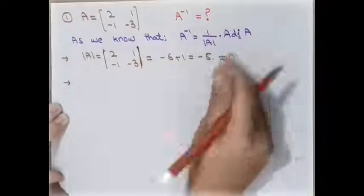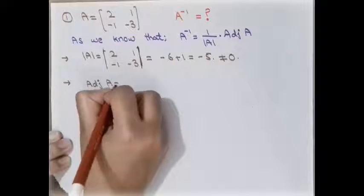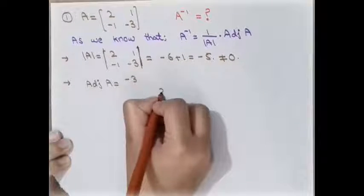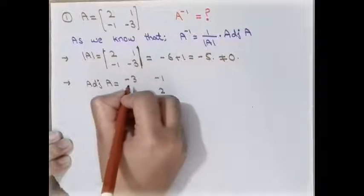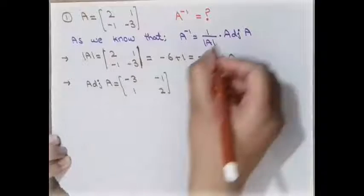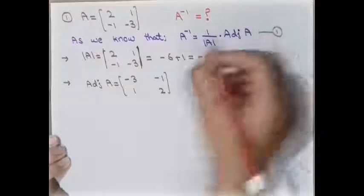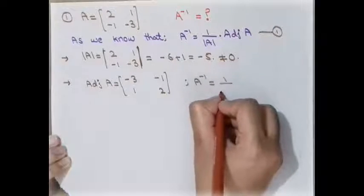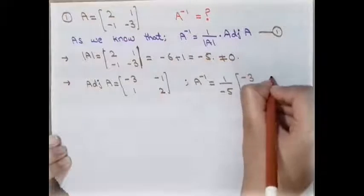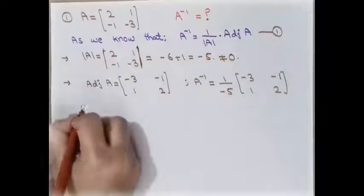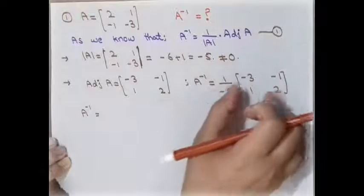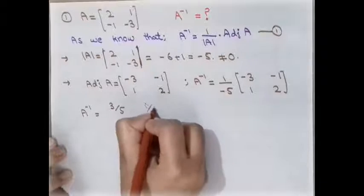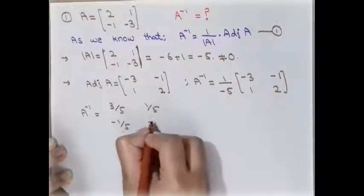The second step is to check that the determinant is not equal to zero — it is not, so matrix A is non-singular. Now we calculate the adjoint: interchange the diagonal entries to get minus three and two, and change the signs of the other entries to get minus one and one. Putting the values into the formula, A inverse equals (1/−5) times the adjoint matrix, giving entries 3/5, −1/5, 1/5, and −2/5.